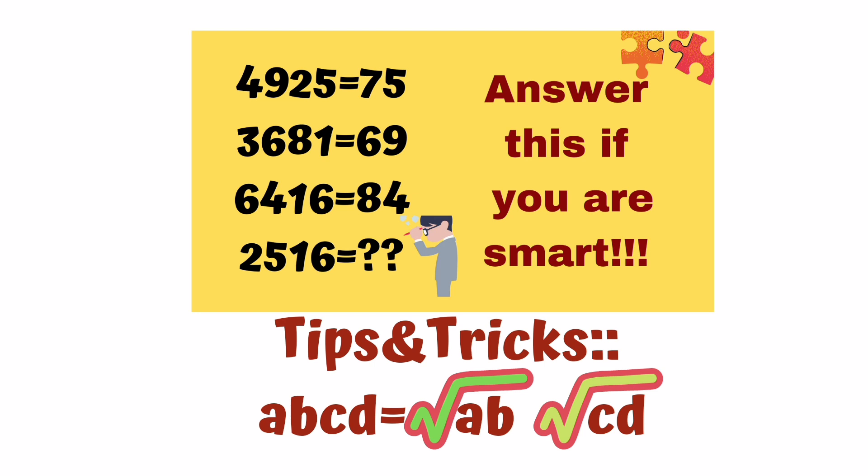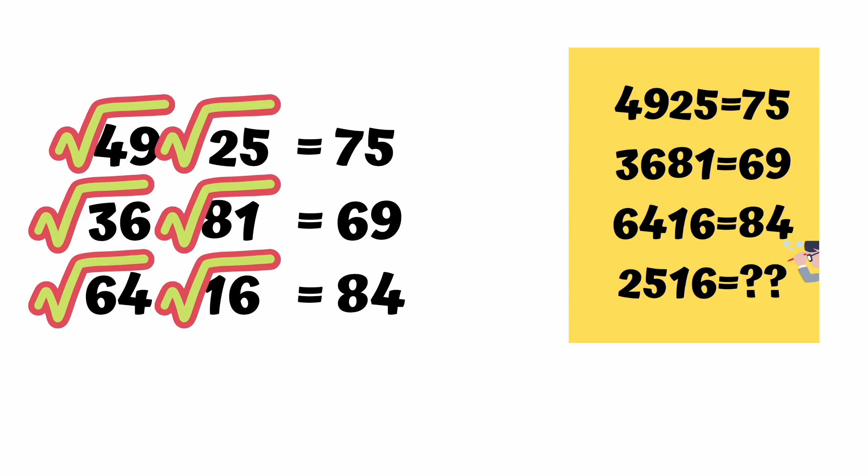Yes friends, you will apply these tricks. So you can see, all the rows will be satisfied. First row is 4925: square root of 49 means 7, square root of 25 means 5. Similarly, second row is 69 and third row is 84.